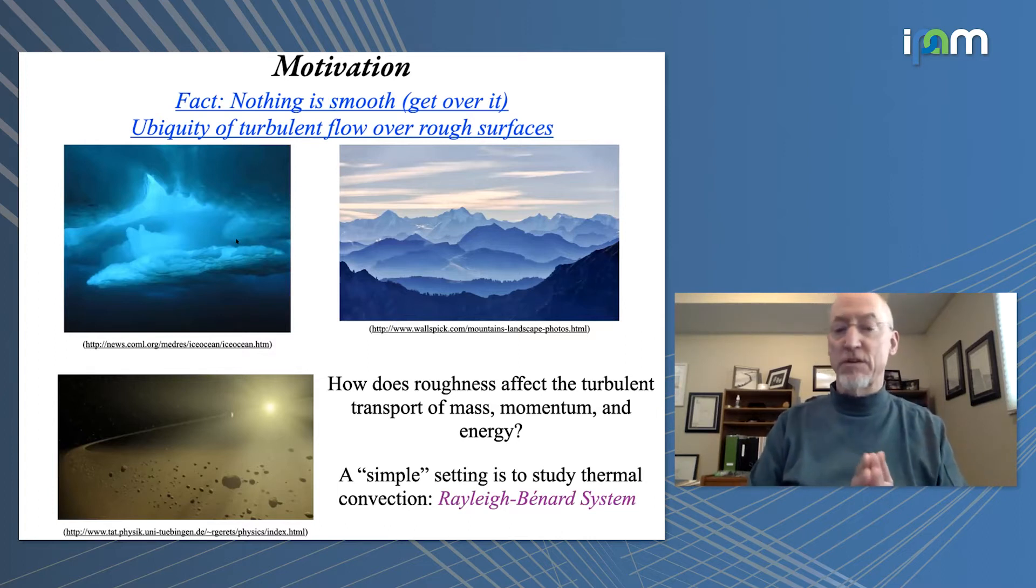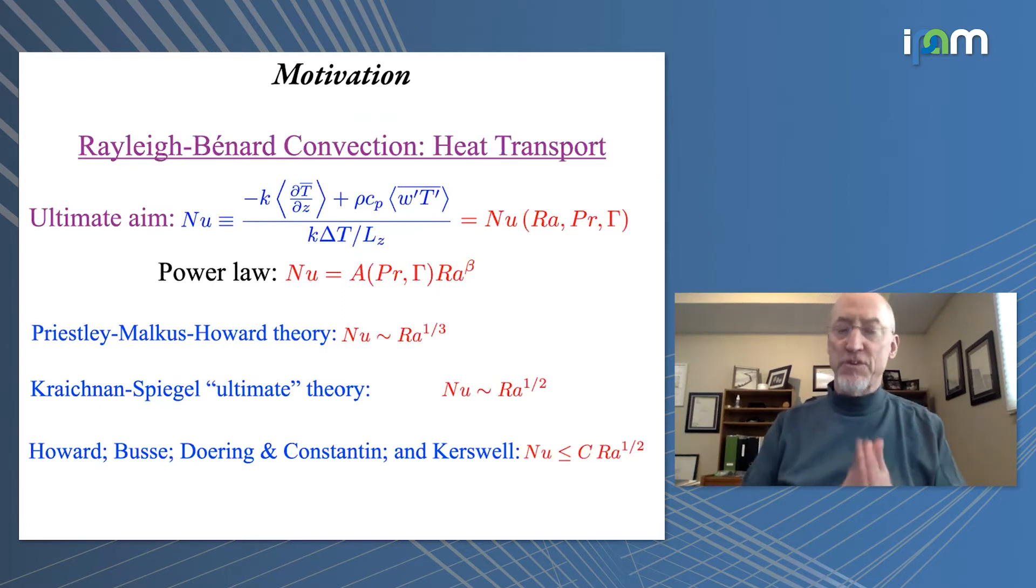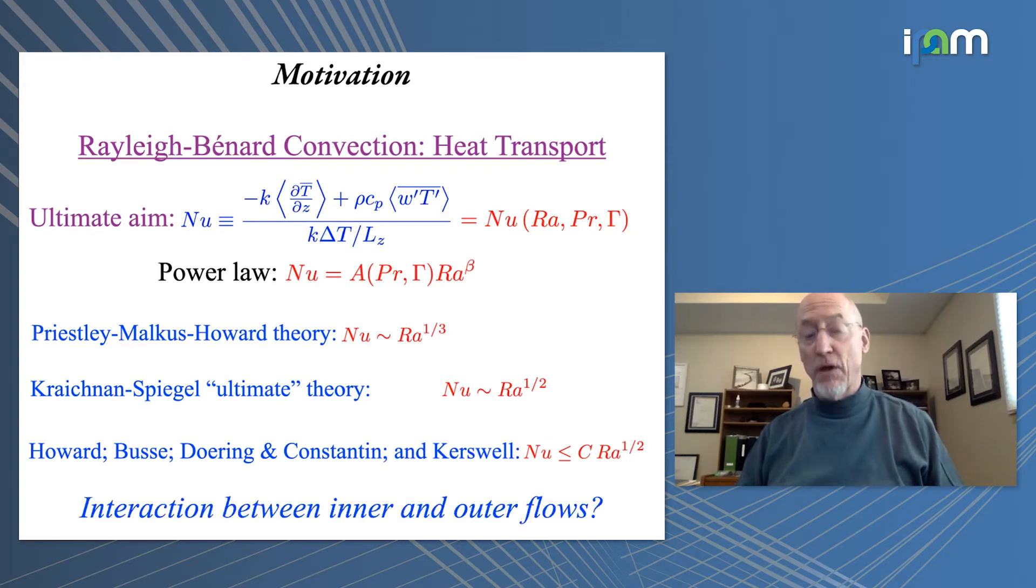Instead, one can translate the question into a quote-unquote simple setting of Rayleigh-Bénard convection. So there's the motivation of the fact that we observe things in nature and they're not smooth, and then there's the motivation of the following. Let me just very briefly say the general question of how Nusselt and Rayleigh are related is the major focus of this area. And we've seen the classical theory, Priestley-Malkus-Howard, the ultimate theory so to speak, the one-half power law, theory-experiment bounds, and I just want to point out that the core questions there had to do with how the inner and outer flows interact.